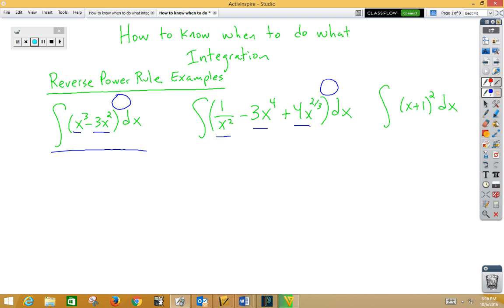Third example, now we could do a u-sub here, but we also could foil that x squared plus 2x plus 1, and then we could integrate with the reverse power rule. So this third example could be done a couple of different ways.